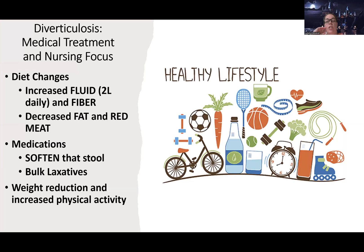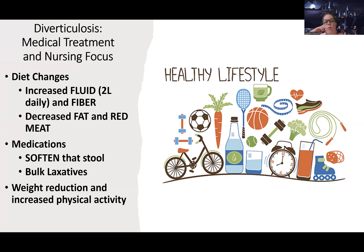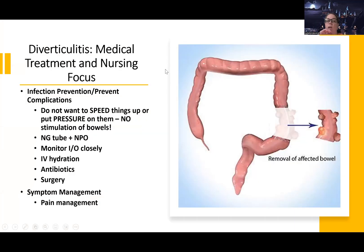For diverticulosis — low chance of problems — we're just doing lifestyle modifications, similar to how we treat constipation: increase fluid, increase fiber, get moving, and weight reduction if needed. To prevent constipation we can use stool softeners or bulk-forming laxatives, but stay away from stimulant laxatives because we don't want dependence on a laxative for a bowel movement. Decreasing fat and red meat has also been shown to specifically help with diverticulosis.